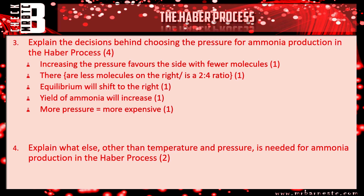Why do we not increase above 200 atmospheres? More pressure means more expensive. So the compromise is 200 atmospheres — a compromise between yield and cost — which gets you an extra mark. There are six ways you could have got the four marks there.